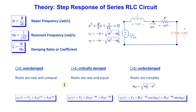The damping coefficient determines the type of the response. If zeta is greater than 1, we have an overdamped response. In this case, the roots are real and unequal.